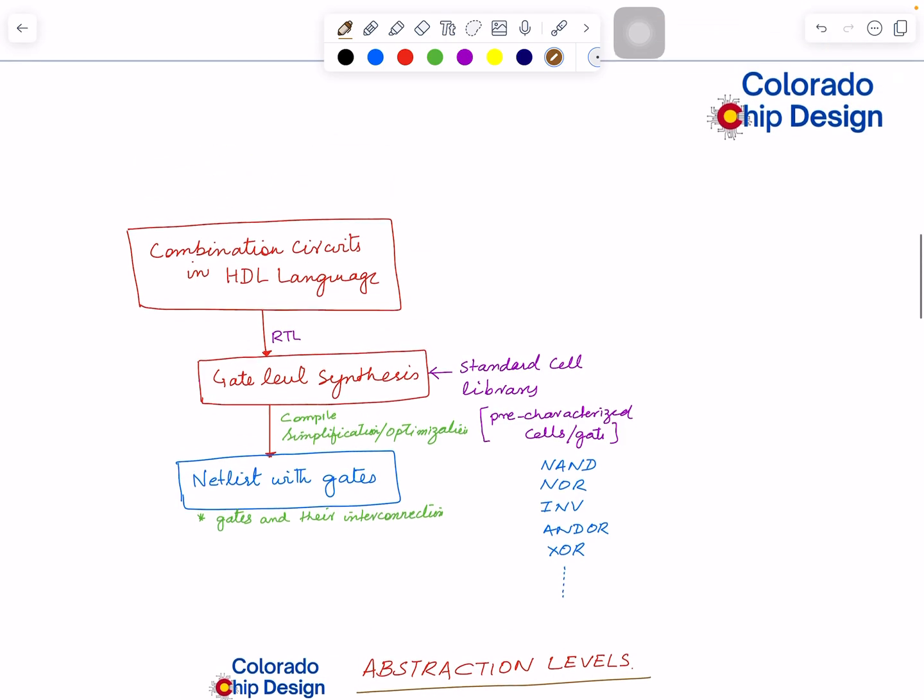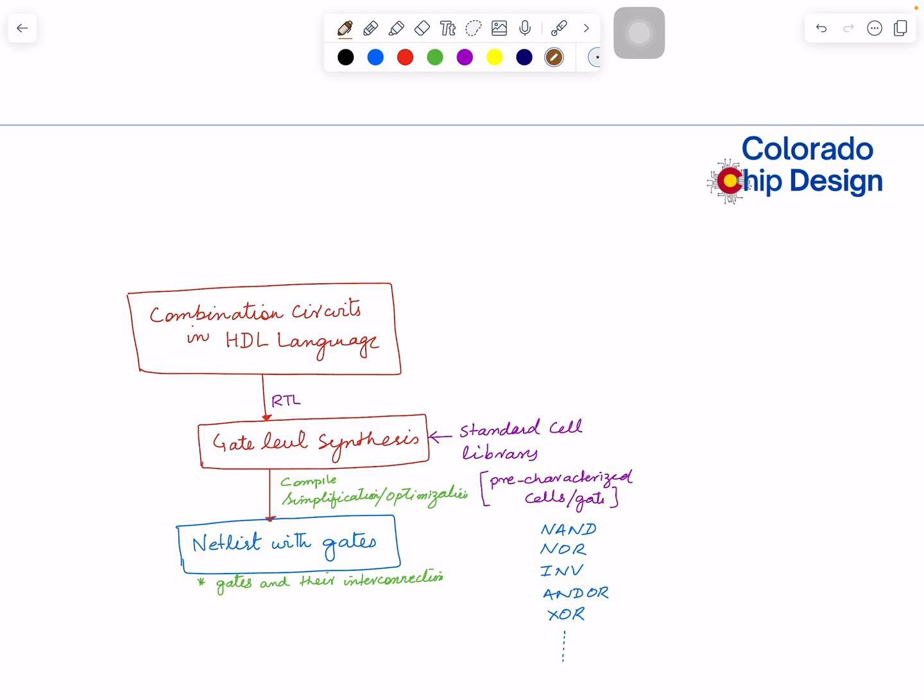Before we go into abstraction level, let's review what we did so far. We looked into gates, created combinational circuits, and simplified or optimized them. Someone new might be asking how that happens. When we want to create a chip, I want to spend a little time there and give an idea of standard cell library and netlists and gates.